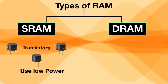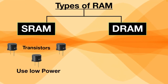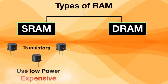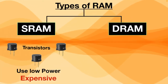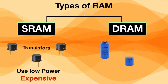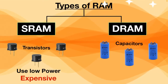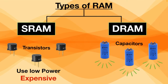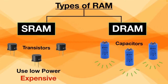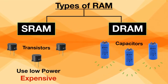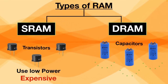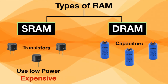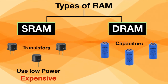However, SRAM is expensive. In DRAM, data is stored in capacitors and slowly discharges power. That's why it's called dynamic — because the gradual energy decline means its power needs to be refreshed periodically to work properly.